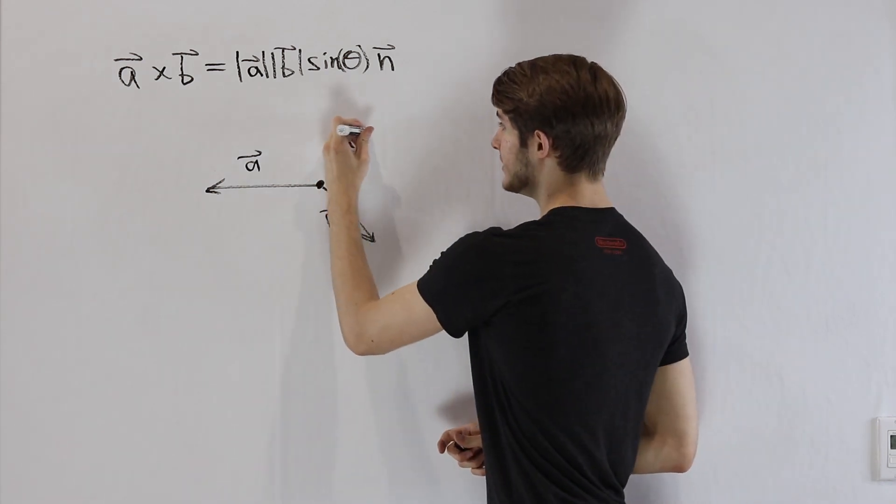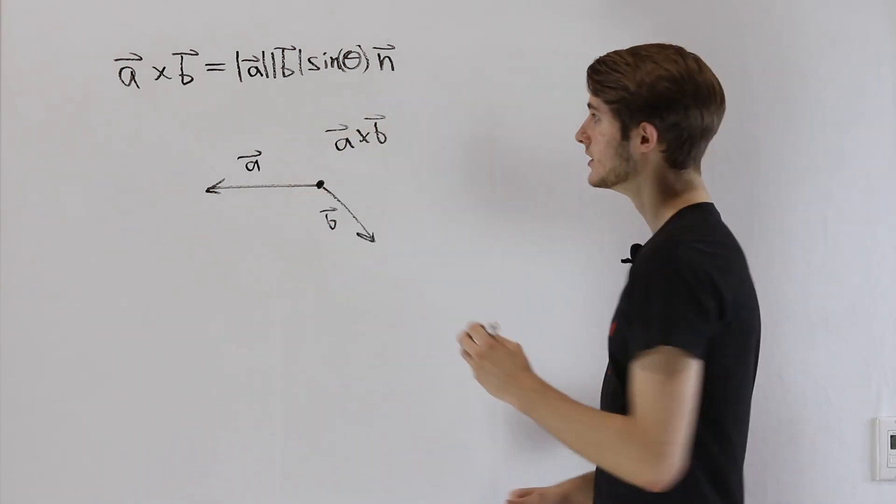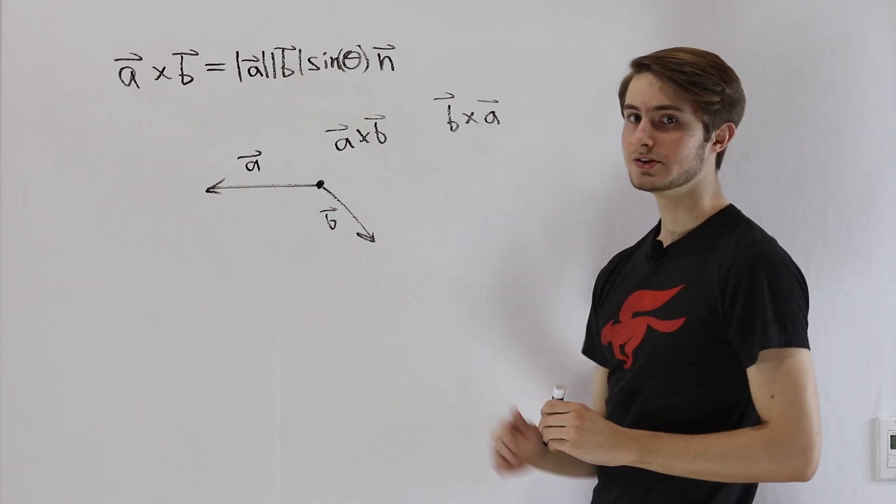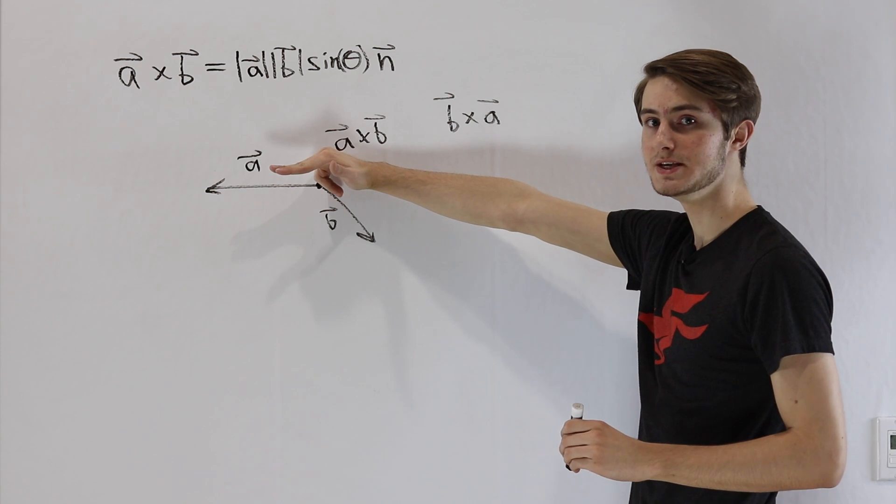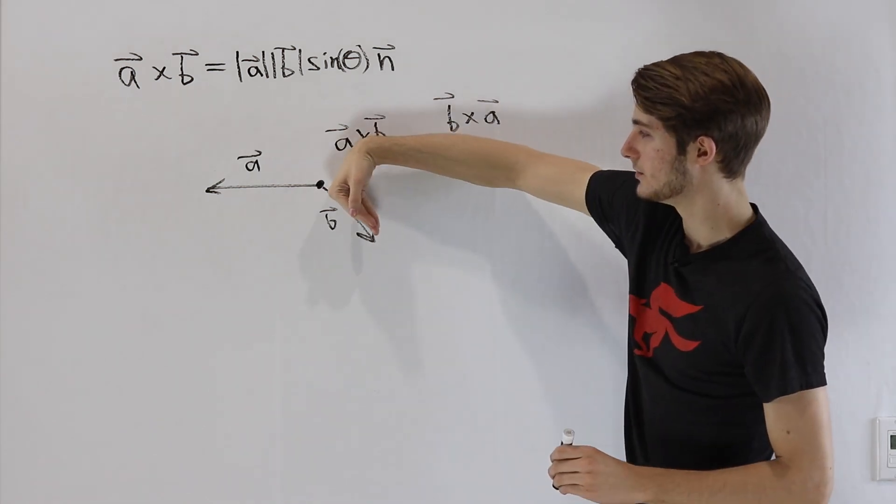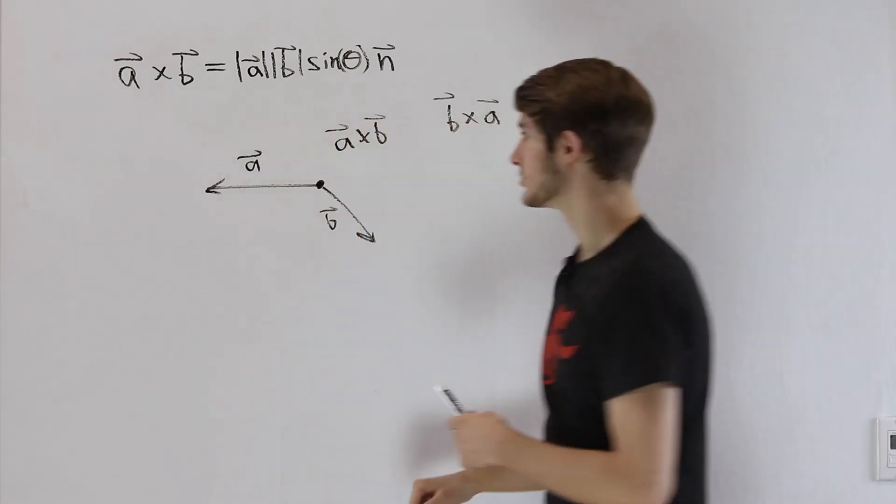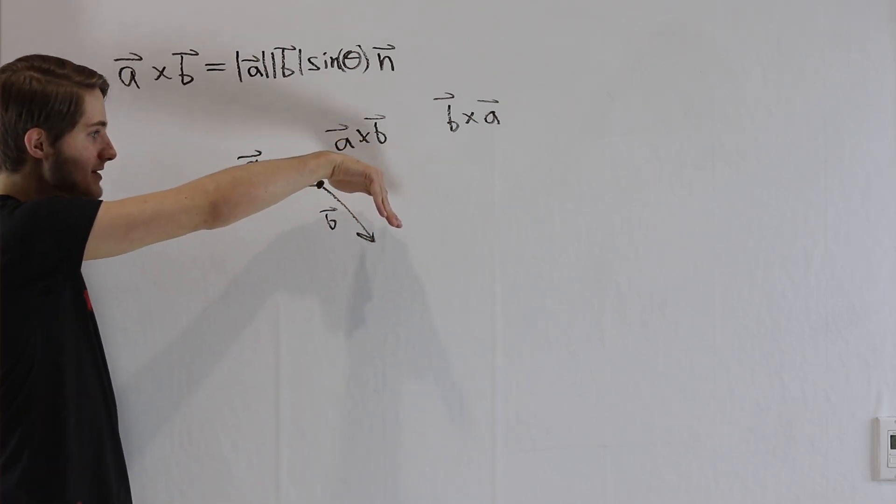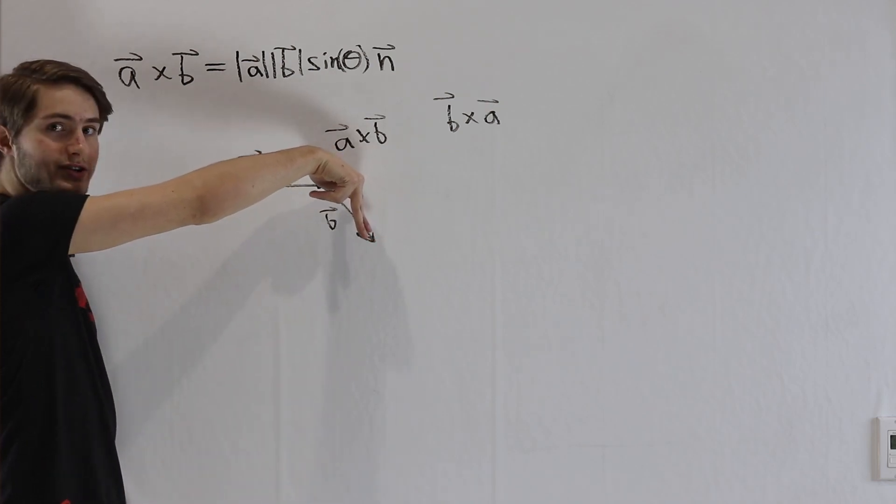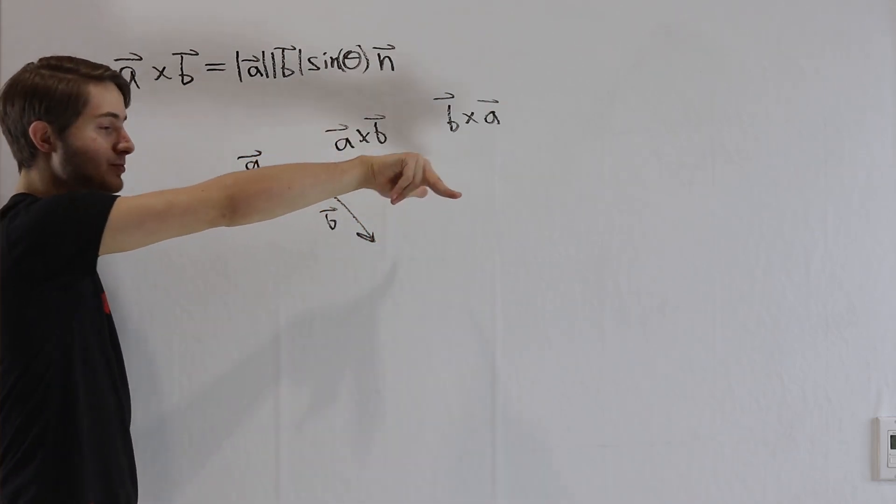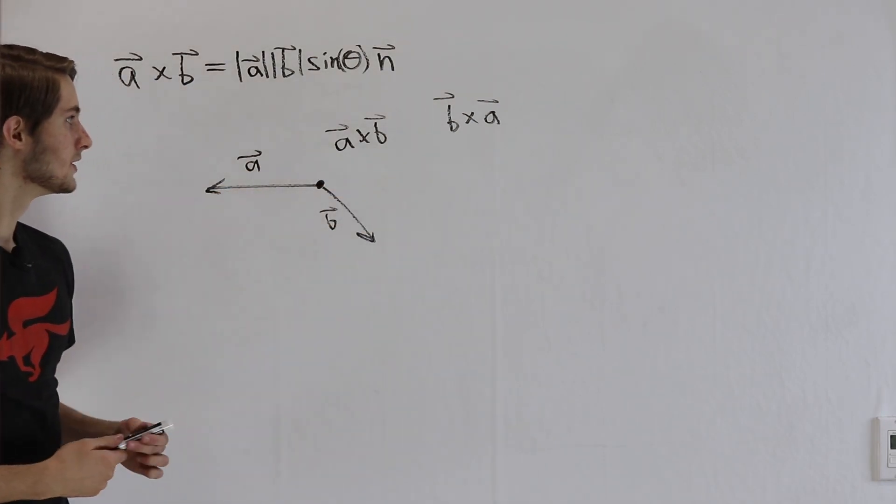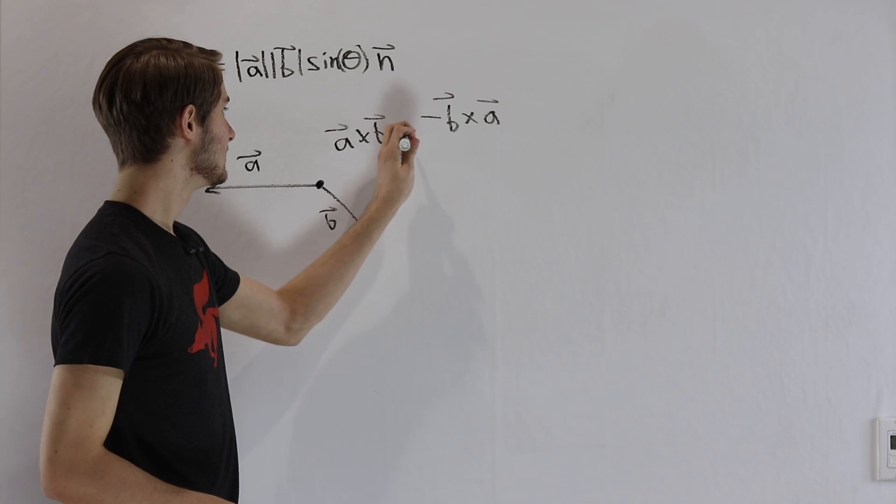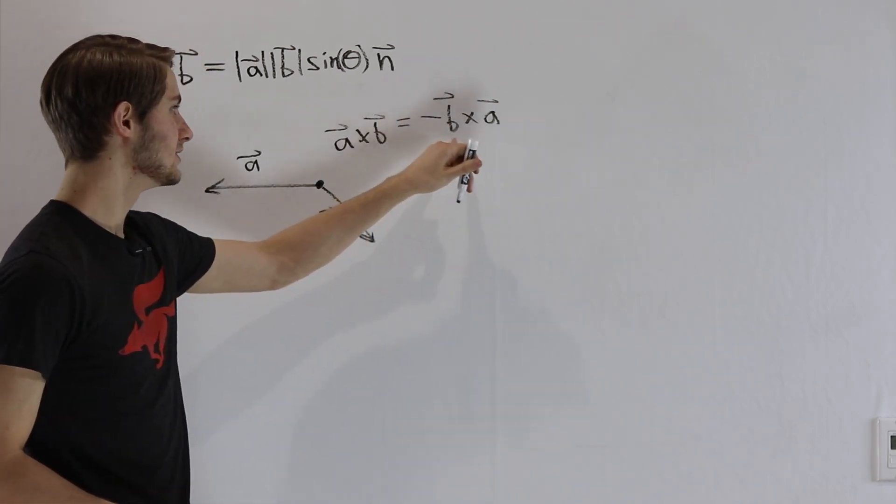On the other hand, instead of A cross B, to point out, what if we took B cross A? Well, in that case, we would get the same magnitude, but instead of starting with A and curling our fingers toward B, we'd have to start with B. Well, we can't really curl our fingers toward A right now, that's weird. So I'm going to have to change my orientation. If I turn my hand the other direction, point my fingers towards B, suddenly I can actually curl these fingers on the bottom towards A. And in that case, notice my thumb is pointing into the whiteboard as opposed to out. So we actually have the opposite normal vector in the case of B cross A. And that means that A cross B is negative of B cross A.